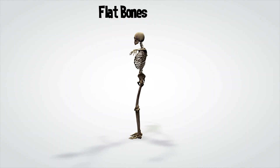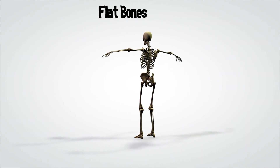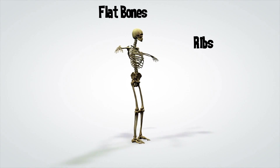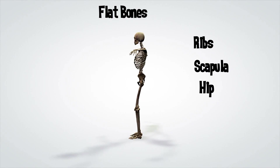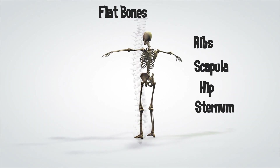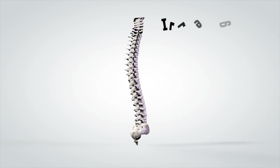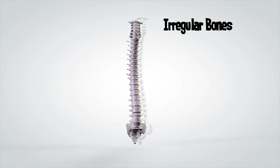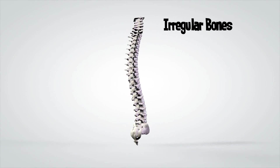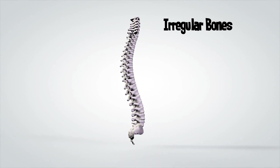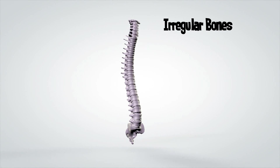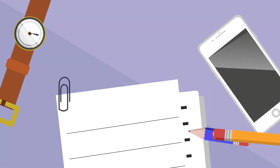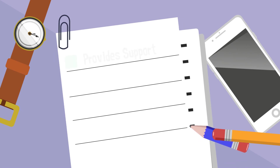Flat bones are thinner bones that can be either flat or curved. Examples include your ribs, scapula, hip, and breast bone. The irregular bones are odd shaped bones needed to connect other bones. They provide protection — for example, the nerves of the spinal cord. Examples include the vertebrae.